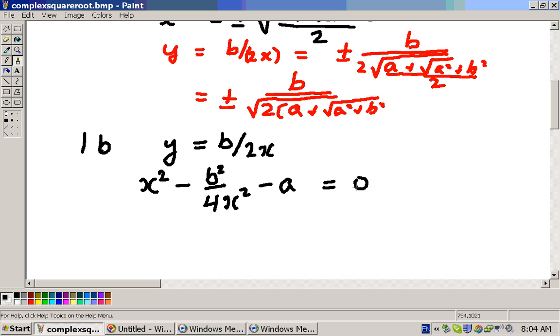Now that looks a bit fierce, but if we multiply this equation by 4x², then we'll get 4x² times x², so that's 4x⁴, and then we'll have minus b², and then we'll have minus 4ax².